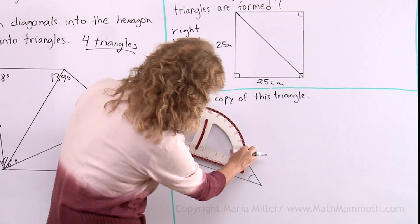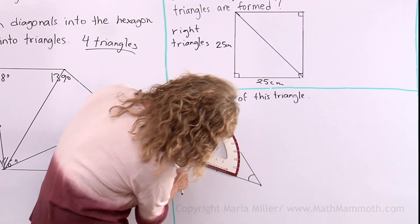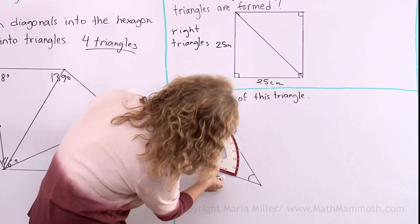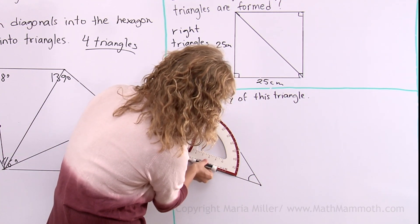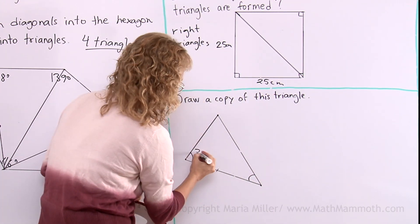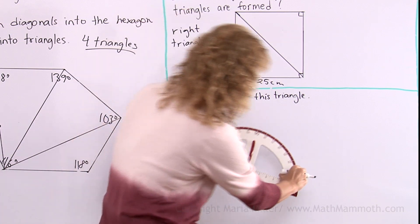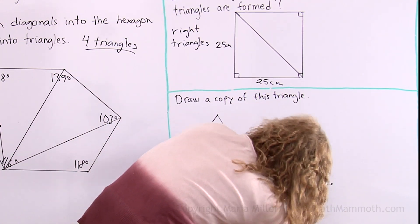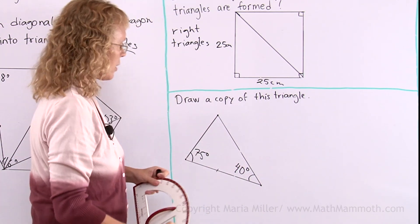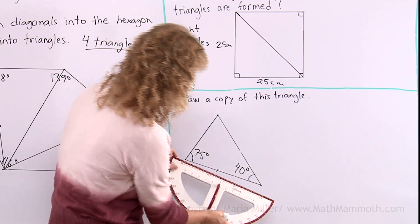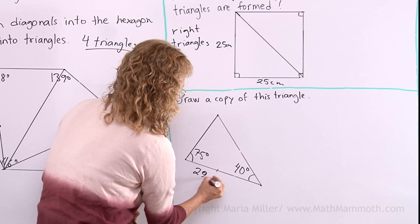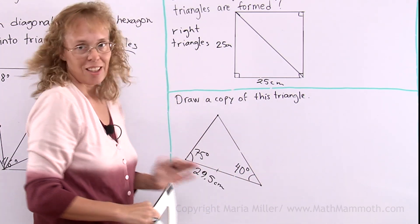So let me measure now. Measure this angle. I have to put the vertex here in the midpoint, line up this, and the angle opens up here, over there. So it's 75. Then measure this angle. 40 degrees. And then measure how long this is. 29 and a half centimeters. That's all I need to know.